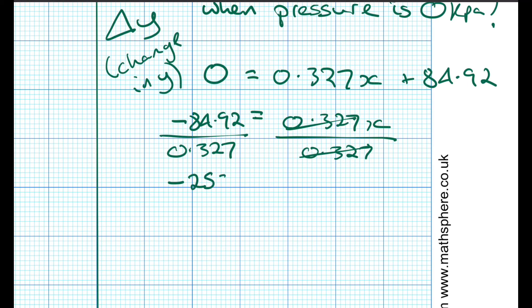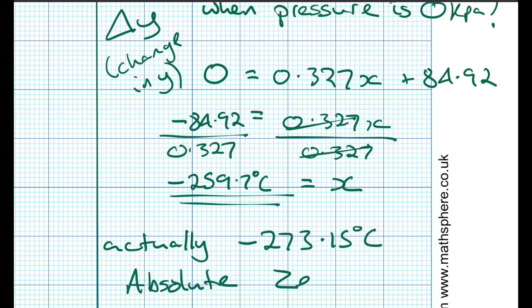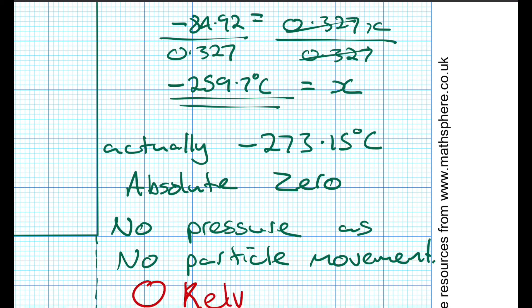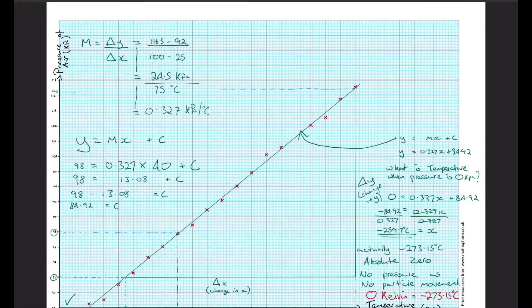From our graph this gives us the temperature of minus 259.7 degrees Celsius. Now that's not accurate because our line of best fit was drawn by hand and we were only using a very short range of temperatures. The actual temperature at which pressure is zero is minus 273.15 degrees Celsius and we call that temperature absolute zero, where there is no pressure, no particle movement, no energy. This is the temperature that our Kelvin scale starts from. Zero degrees Kelvin is minus 273 degrees Celsius and it goes up in the same increments as the Celsius scale.